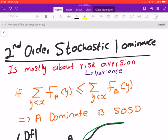So anyway, we say that if the sum of the CDF of A is less than or equals to the sum of the CDF of B, the CDF by the way is the cumulative distribution function, then A dominates B.